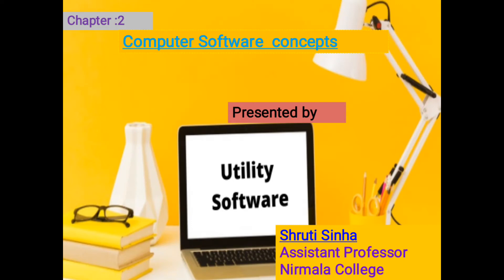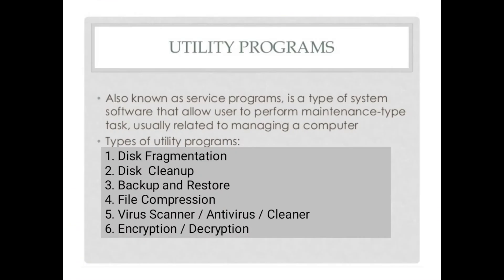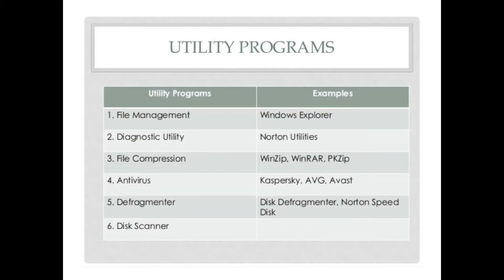Good morning everyone, I am Shruti Sinha. Today we will see utility software concepts, booting concepts, and open source software concepts of the chapter 'Software Concepts'. Let's get started. Utility software programs, also known as service programs, is a type of system software that allows users to perform maintenance tasks usually related to managing a computer. There are various types of utility programs like disk fragmentation, disk cleanup, backup and restore, file compression, virus scanner, antivirus, and encryption and decryption.